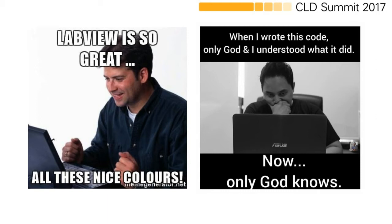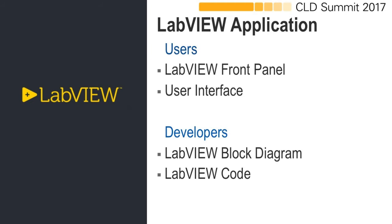Many of you might have found that LabVIEW is very easy to use and you can drive block applications, but you might end up with a scenario where you have written code that works perfectly fine, but next time you want to modify it, it becomes very difficult to understand. In LabVIEW, the front panel provides the user interface to control the flow of the application, while the block diagram contains the graphical code to run it. The front panel is for users and the block diagram is primarily for developers.